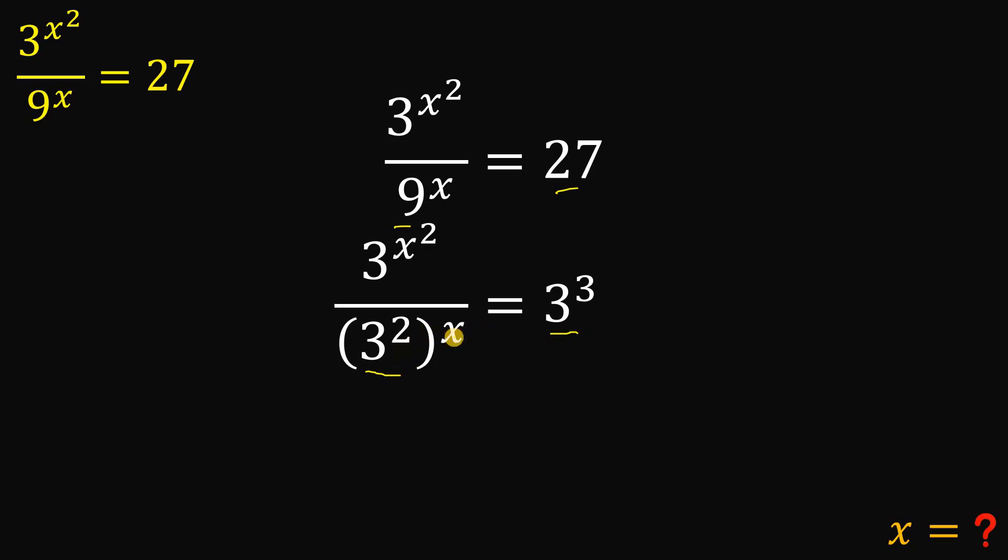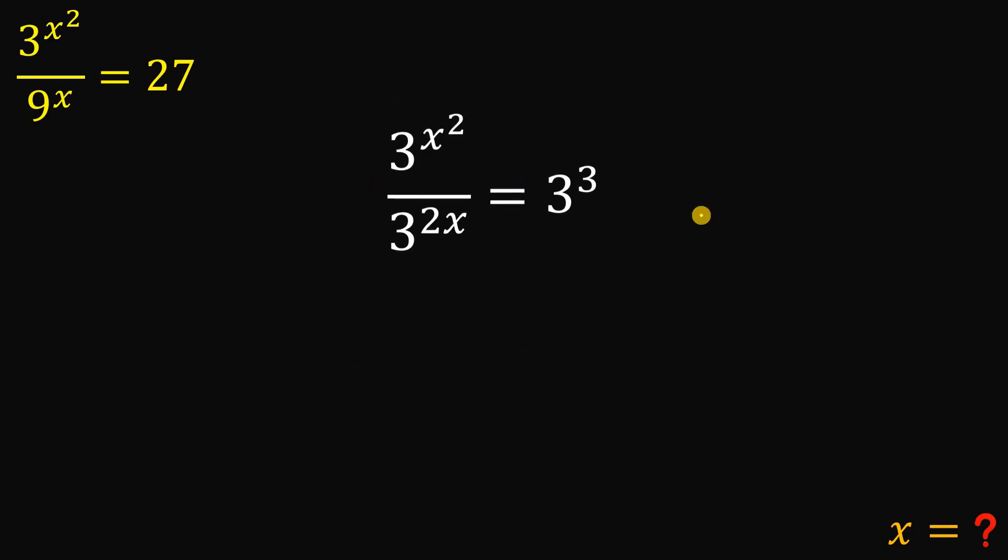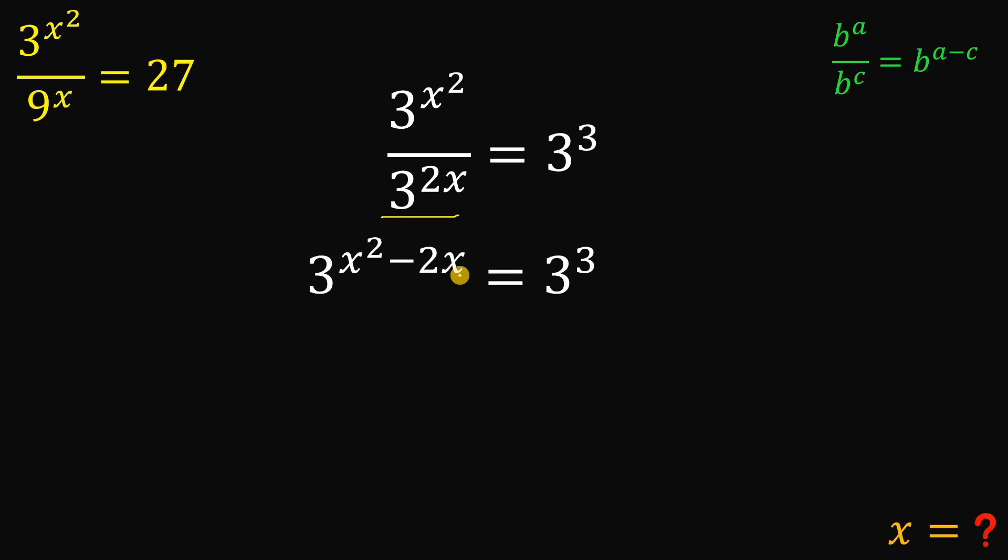Now, 3 raised to the power of 2 raised to the power of x, we can simplify this as 3 raised to the power of 2 times x. Or we can multiply their exponent to 2x. Now, let's focus on this result. And what we're going to do is to use some laws of exponent. If we have the same base, b raised to the power of a over b raised to the power of c, we can rewrite this as b raised to the power of a minus c. So, the left-hand side of our equation, we can rewrite this as 3 raised to the power of x squared minus 2x.